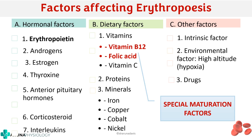Thus we have completed our factors affecting erythropoiesis. Vitamin B12 and folic acid are also called the special maturation factors. From this topic, a question can be asked as a short essay on erythropoietin, or on hormonal factors affecting erythropoiesis, or even on dietary factors affecting erythropoiesis.